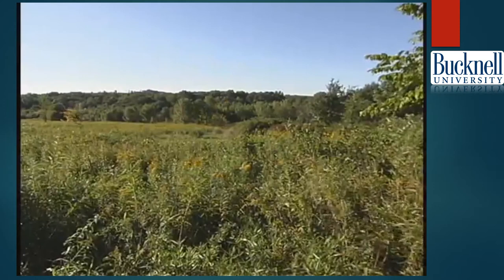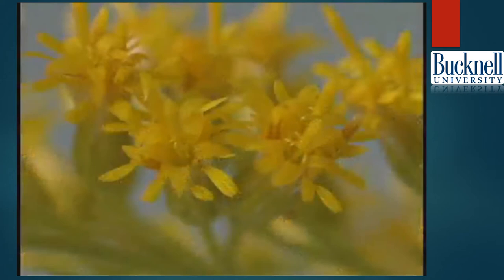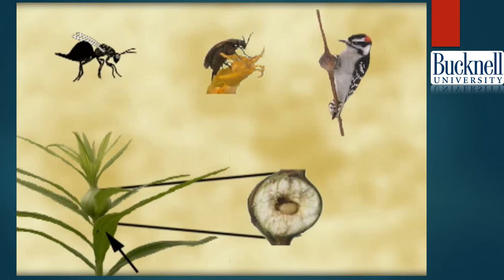Across much of North America east of the Rockies, as spring turns to late summer, a marvelous transition occurs — fields of green become a blaze of gold. At the heart of this metamorphosis is a flowering plant called goldenrod. Using goldenrod and the species that depend on it, we will examine three levels of ecological interaction. The first level is the plant, often referred to as the host plant because of its role in providing food and shelter for insects that feed upon it.